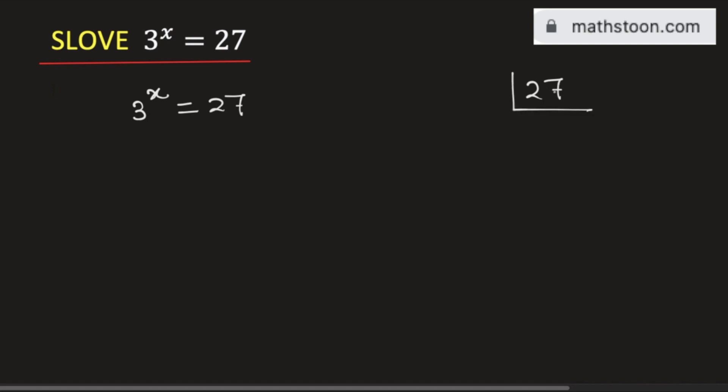We know that 27 is divisible by 3. We get 9. Again, 9 is divisible by 3 and then we get 3. And 3 is divisible only by 3. So we get 1.